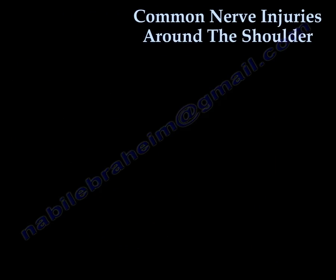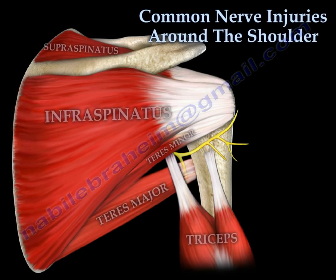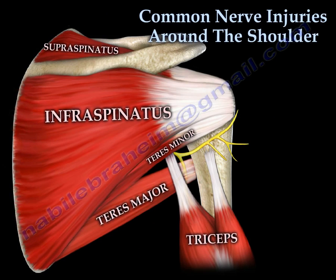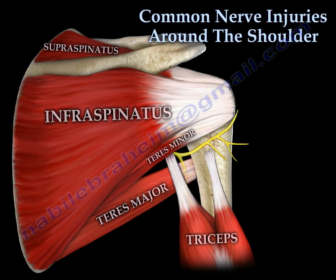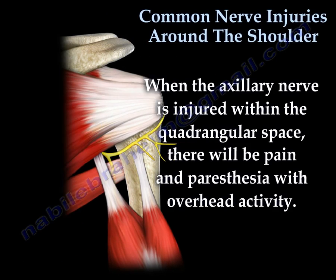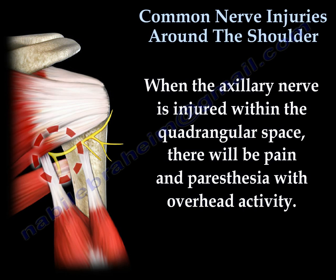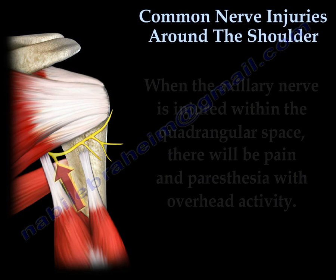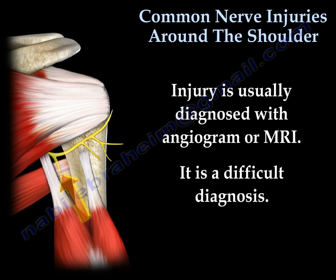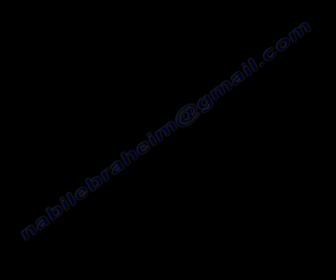When the axillary nerve is injured in the quadrangular space, there will be pain and paresthesia with overhead activity. The injury is usually diagnosed clinically, and with the addition of angiogram or MRI.